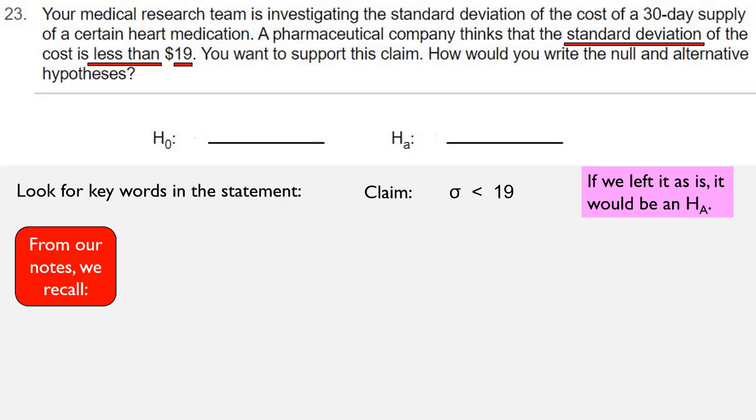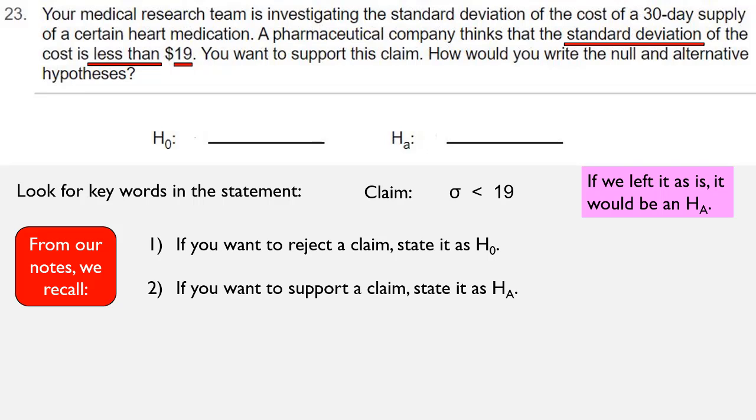So from our notes, we should remember these statements. If you want to reject a claim, then you need to state it as H0. If you want to support a claim, state it as HA.